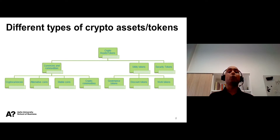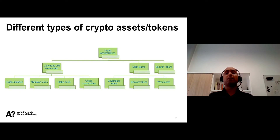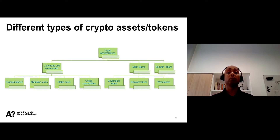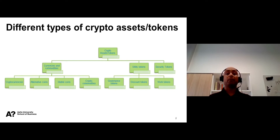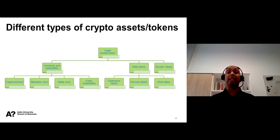Utility tokens can be of several types. First, they can be governance tokens that offer a say on the consensus protocol, products or services, as well as the future strategy of a crypto-based firm. A notable example is the DMM governance token.